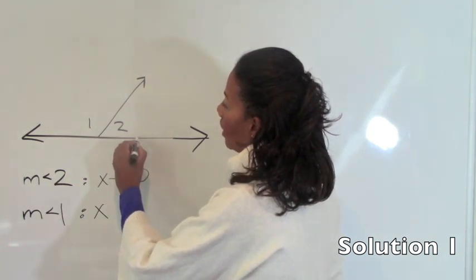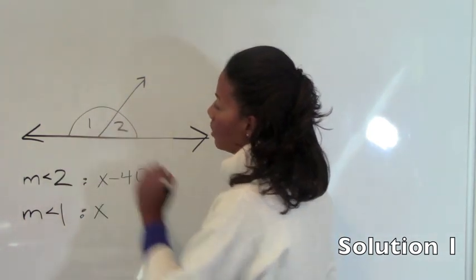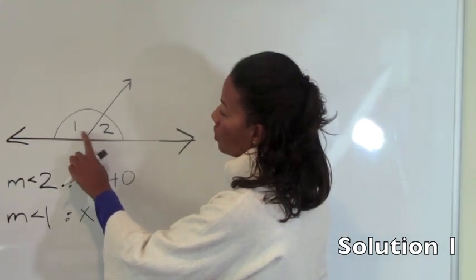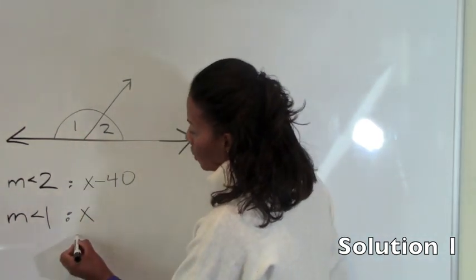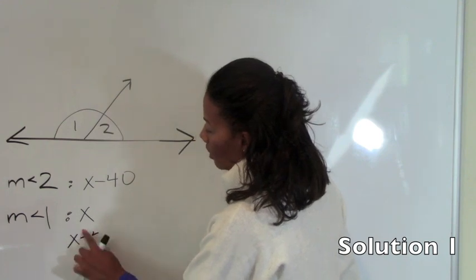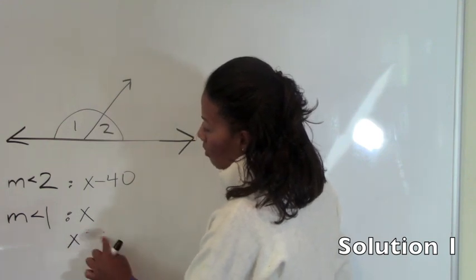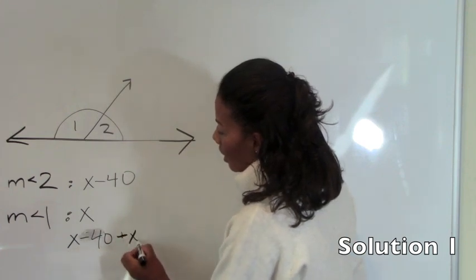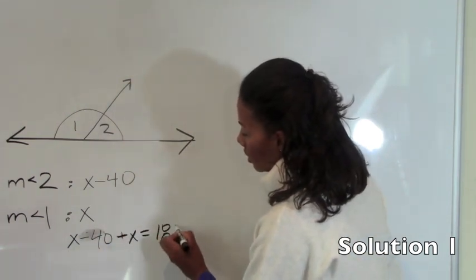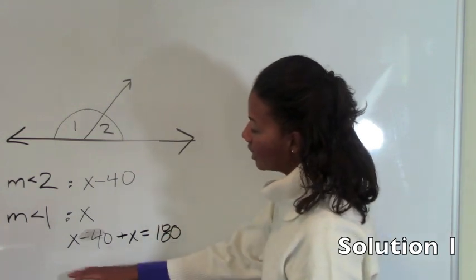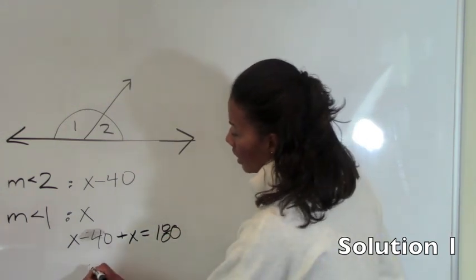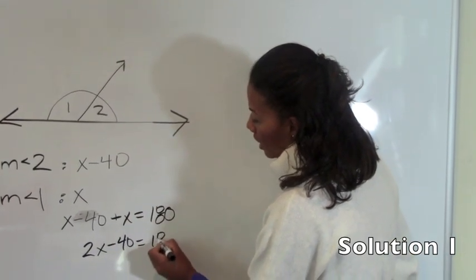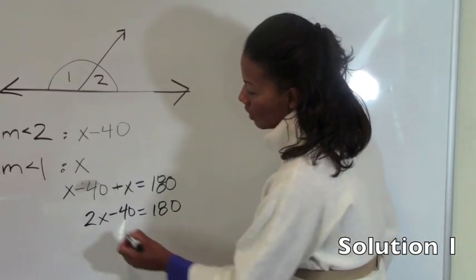Remember that a line is 180 degrees. So the sum of the measure of angle 1 and the measure of angle 2 is 180 degrees. So we can create an equation of x minus 40 plus x equals 180 degrees. We're going to simplify this left side of the equation to get 2x minus 40 equals 180 and then solve the equation.